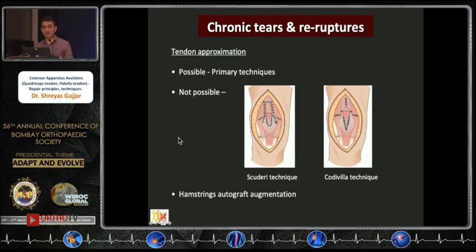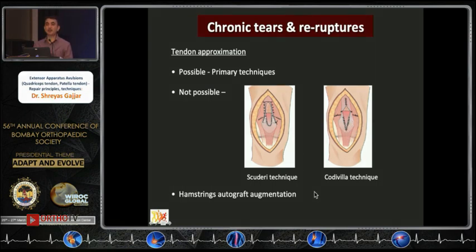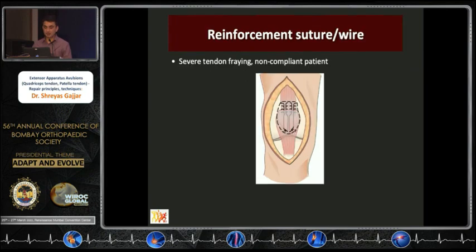Chronic tears and re-ruptures are challenging. The principle is to try and achieve tendon approximation; if possible, primary techniques can be attempted. If not, there are two described techniques: reinforcing the quadriceps tendon flap to reinforce the repair, and a VY plasty used to lengthen in cases of shortening. Hamstring autograft augmentation can also be used for chronic tears where approximation is difficult. If there is concern about tendon fraying or a non-compliant patient, a reinforcement suture or cerclage wire can be added to the repair construct.